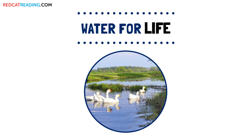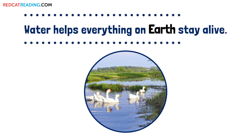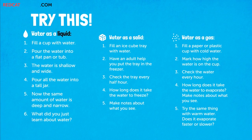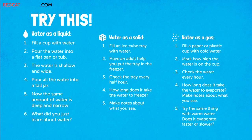Water for life. Plants and animals need water. Water helps everything on earth stay alive. Water as a liquid: fill a cup with water and pour the water into a flat pan or tub — the water is shallow and wide. Pour all the water into a tall jar — now the same amount of water is deep and narrow. What did you just learn about water?